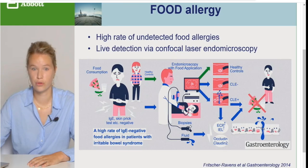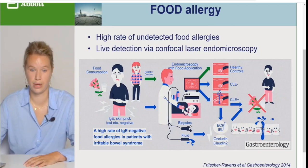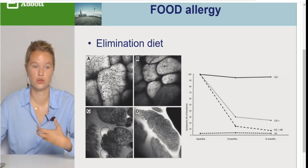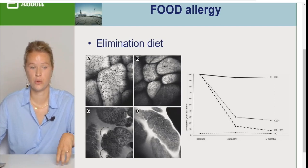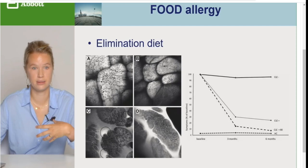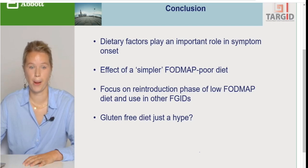Nội dung cuối cùng mà tôi muốn đề cập đó là dị ứng thực phẩm, cũng là một cái chủ đề nóng bỏng hiện nay. Tần suất của dị ứng thực phẩm cũng cao mà chưa được phát hiện hết. Người ta có thể sử dụng kính hiển vi nội soi bằng laser đồng trục. Khi bệnh nhân mà có phơi nhiễm đối với các kháng nguyên trong thực phẩm, nó sẽ dẫn tới cái sự gia tăng của các tế bào lympho. Những cái thay đổi này được khảo sát ngay trên biểu đồ này, những cái chế độ ăn loại trừ cho thấy có cải thiện triệu chứng tích cực và làm giảm cái mức điểm số của triệu chứng của bệnh nhân. Cái yếu tố trong chế độ ăn đó là một vai trò quan trọng trong khởi phát triệu chứng.